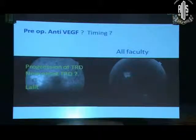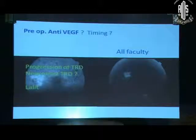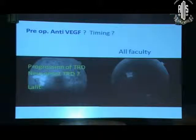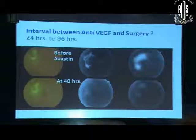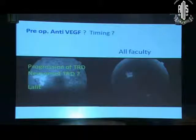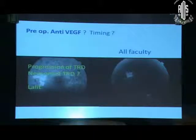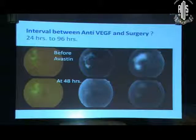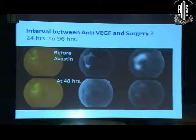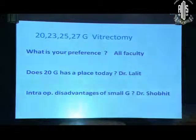There is a fear that if you inject anti-VEGF in a case of traction retinal detachment, there can be a progression, worsening, or even new onset TRD. What is your experience? I had the misfortune of facing that — but the caveat is that it happens late. If you inject anti-VEGF in a patient who is a candidate for surgery and somehow they don't come back, after a couple of months it may precipitate a TRD. This is the status before Avastin, and this is the status at 48 hours — there is complete effect, so you can safely operate after two days.